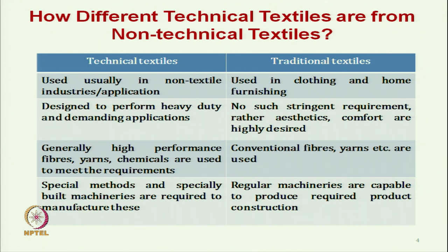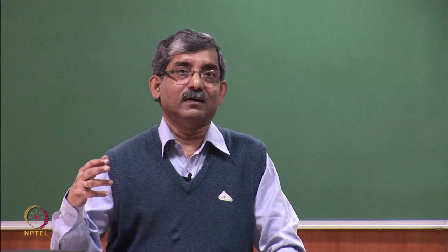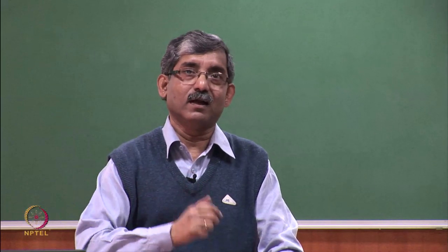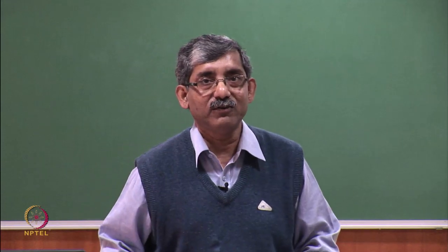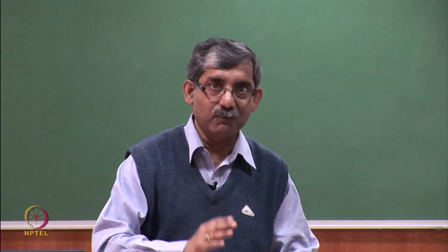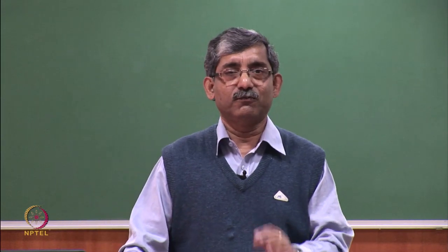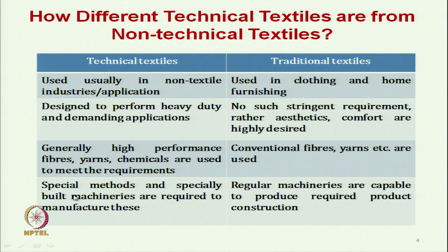Even in traditional textiles, strength is not that important because once the production process is done, we do not need that much strength. Like in weaving, we need yarn strength and that is enough. When we come to the fabric area in traditional textiles, aesthetic and comfort are the characteristics which are important. In technical textiles, we generally use high performance fibres, yarns, and chemicals which are required to meet the specific performance.